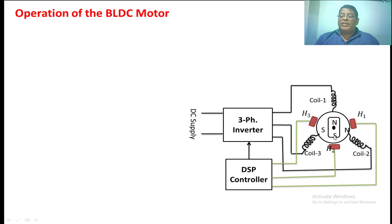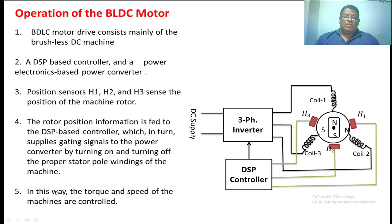Suppose if we take this as south pole and this as north pole of the rotor, the inverter gives a voltage such that a south pole and north pole will be created in the stator, so that there is an attractive force between the north pole and south pole of the stator as well as the rotor. In this way, the torque and speed of the machine are controlled.